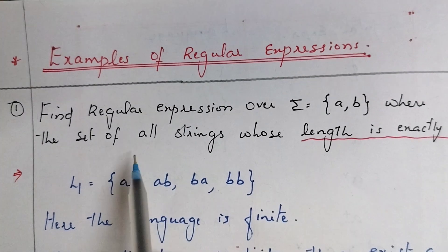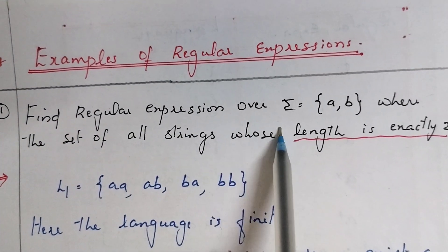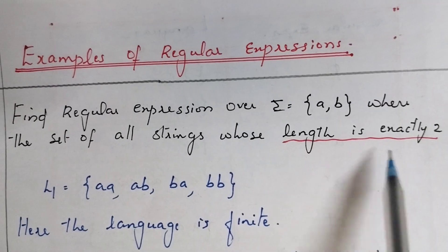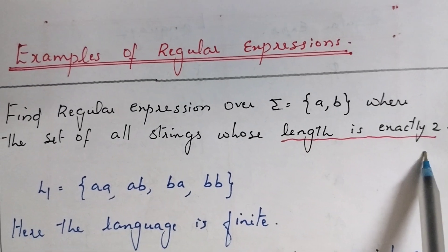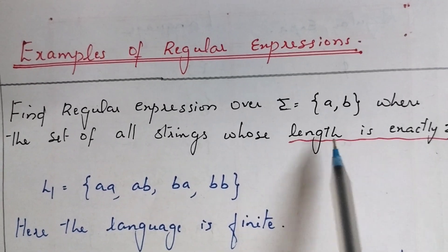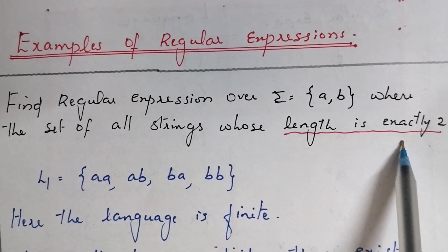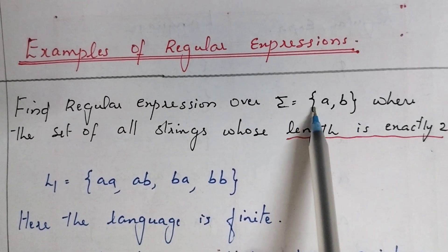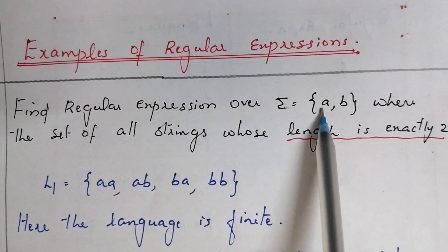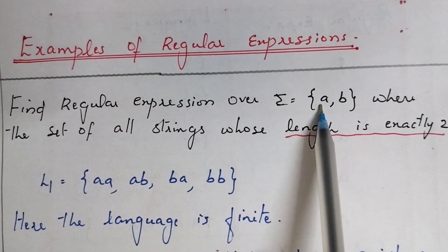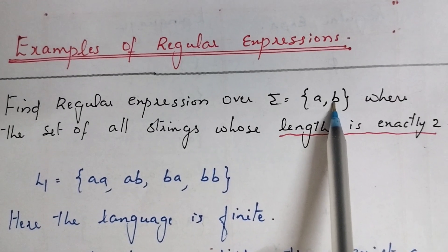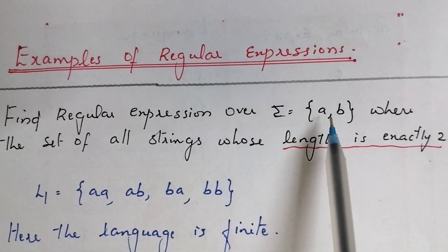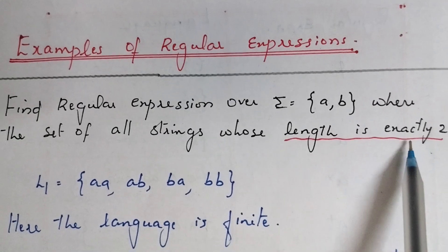So this is our first problem: find a regular expression over the input symbols a and b, where the set of all strings whose length is exactly 2. The input symbols are a and b, and we are going to generate all strings whose length is exactly 2.